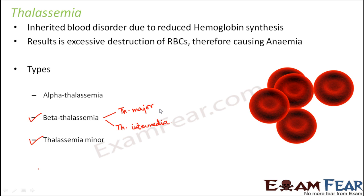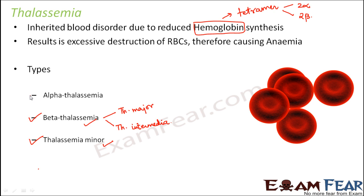Thalassemia major is the more severe form of beta thalassemia. When both beta genes are affected, a person suffers from beta thalassemia — hence the name. The hemoglobin molecule is a tetramer with two alpha chains and two beta chains. When only one beta gene is affected, that is thalassemia minor; when both beta chains get affected, that is beta thalassemia; and when the alpha chain also gets affected, that is alpha thalassemia. As more genes get affected, the more severe the form of thalassemia.